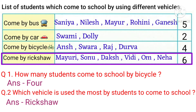In the rickshaw column, we can note that the highest number — 6 students — come to school by rickshaw. So the answer is rickshaw.